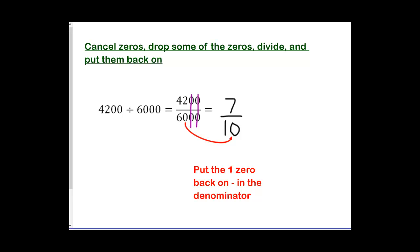In this example I have 4,200 divided by 6,000. Two of the zeros cancel. The zero that I'm ignoring is on the bottom this time, 42 divided by 6 is 7, and when I put the zero back on, it needs to go on the bottom, so I get 7 over 10.